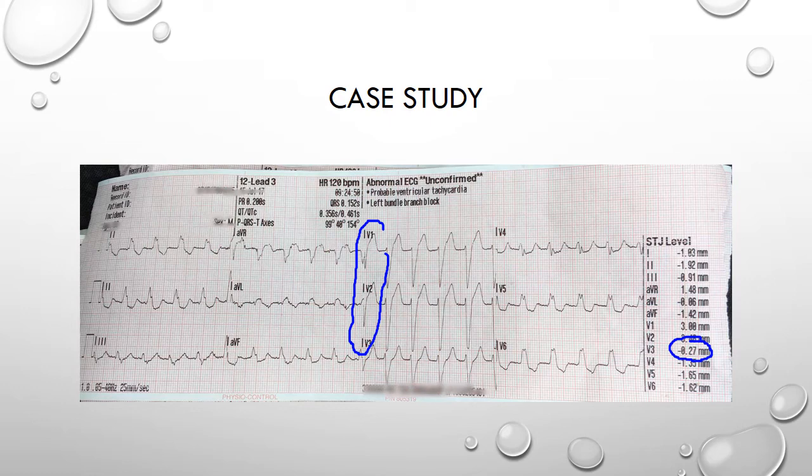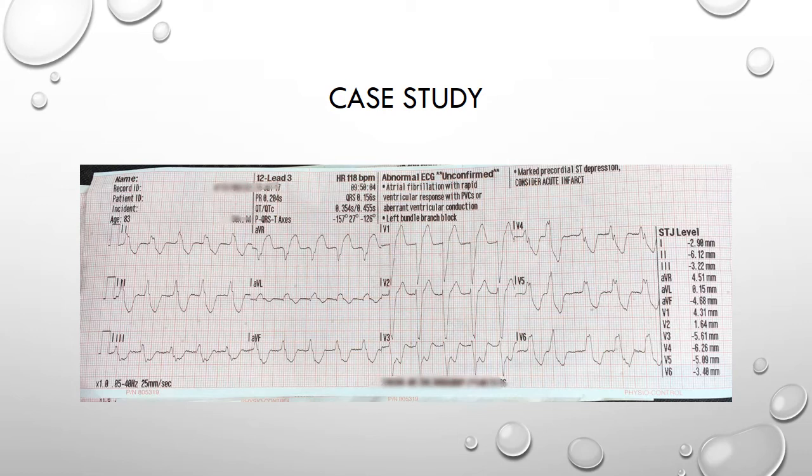The crew demonstrated good clinical practice and performed repeat ECGs whilst the patient was in their care. This ECG, recorded about 25 minutes after the last one and coinciding with the patient becoming pale and clammy, clearly shows dynamic changes — most notably to lead V3. There is now huge concordant ST depression of over five and a half millimetres in that lead, and that now meets Sgarbosa criteria for an acute occlusion. Lead V1 is also coming close to scoring two points with ST elevation of 4.31 millimetres.